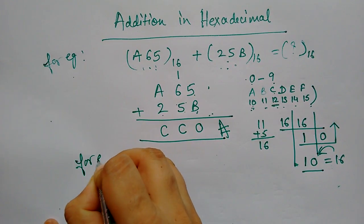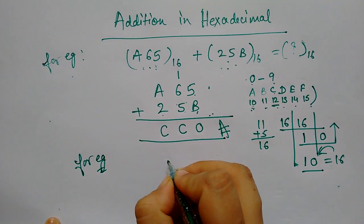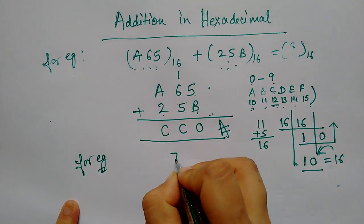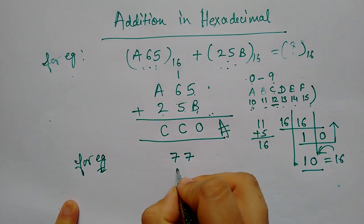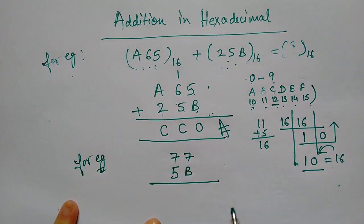For example, let's see. As simple as you have to add. I will add 77, add in 5B. How do you do?